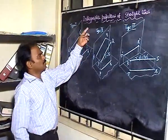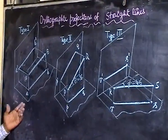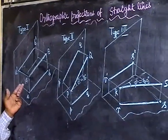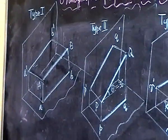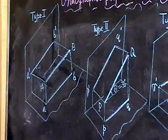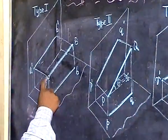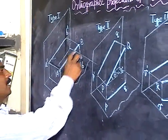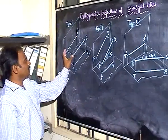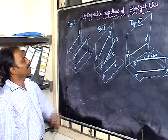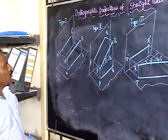Let's see the orthographic position of straight lines, type by type. First, let's see the simple case — take straight line AB. It is kept parallel to both HP and VP. Point A is placed at a height above HP, and the same height is maintained at B also. It is placed at a distance in front of VP, and the same in-front distance is maintained at end B also. Naturally the straight line will be placed parallel to both HP and VP.